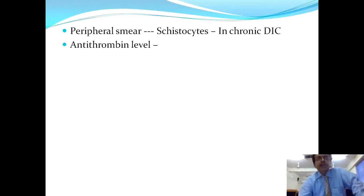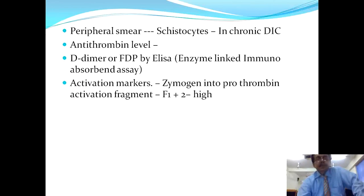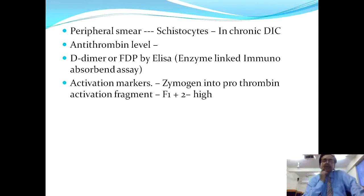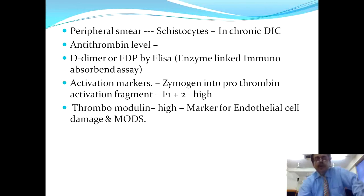In the peripheral smear, schistocytes may be found in the chronic variety of DIC. Antithrombin levels may also be measured. D-dimer level assay by ELISA will be high. Activation markers including prothrombin activation fragments F1 and F2 are high in DIC states. Thrombomodulin is also elevated and is a marker for endothelial cell damage and multi-organ dysfunction.